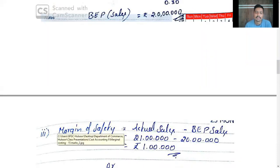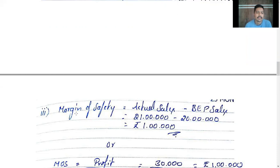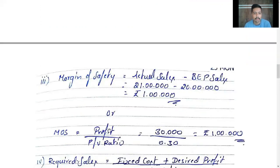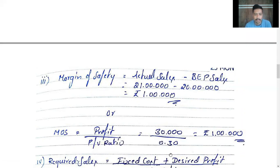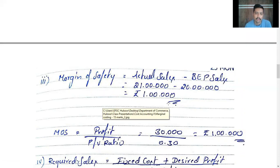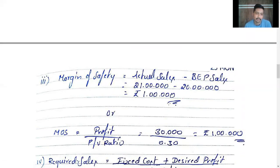Number 3 — margin of safety. Formula: actual sales minus BEP sales. Actual sales 21,00,000 minus BEP sales 20,00,000 equals margin of safety of Rs. 1,00,000. Alternatively, profit divided by PV ratio: 30,000 divided by 30% also gives Rs. 1,00,000. Both formulas give the same answer.